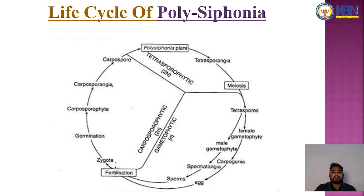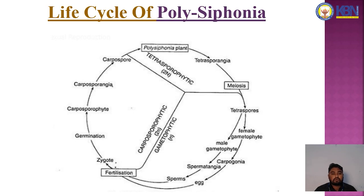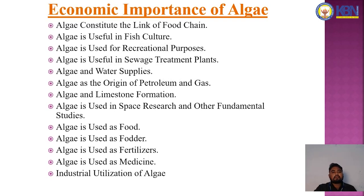The life cycle of Polysiphonia has three stages: tetrasporophyte, gametophyte, and carposporophyte. The polysiphonous plant bears tetrasporangia; after meiosis they produce tetraspores. The tetraspores divide into male and female gametophytes. The female gametophyte produces the carpogonium and the male produces spermatangia. The carpogonium produces the egg and the spermatangium produces the sperm. Upon fertilization, a zygote is formed, which germinates to produce the carposporophyte, carposporangia, and carpospores, which then grow into the Polysiphonia plant.